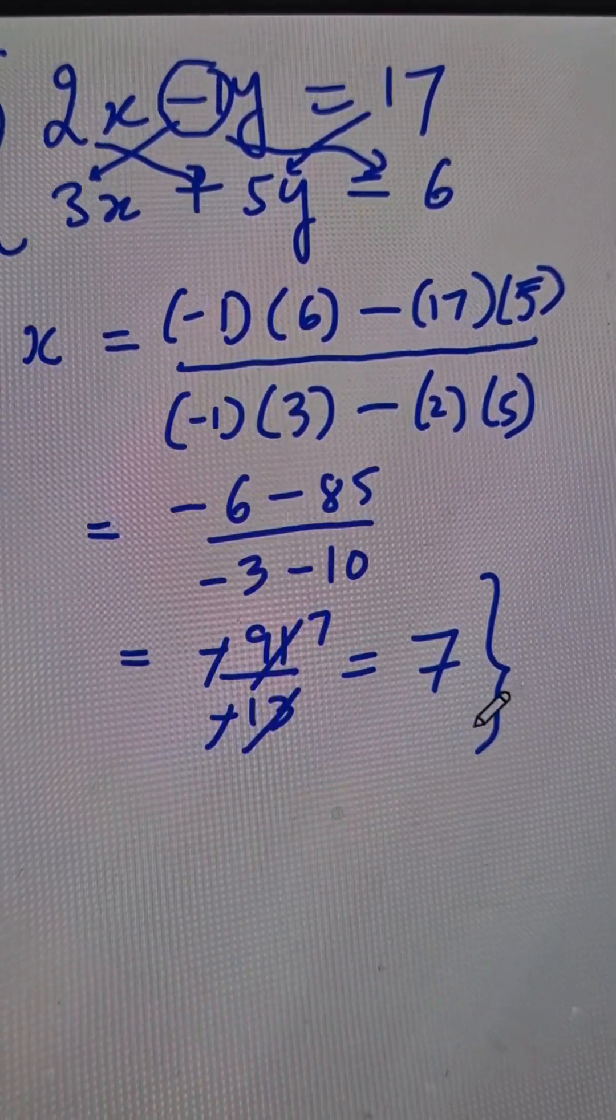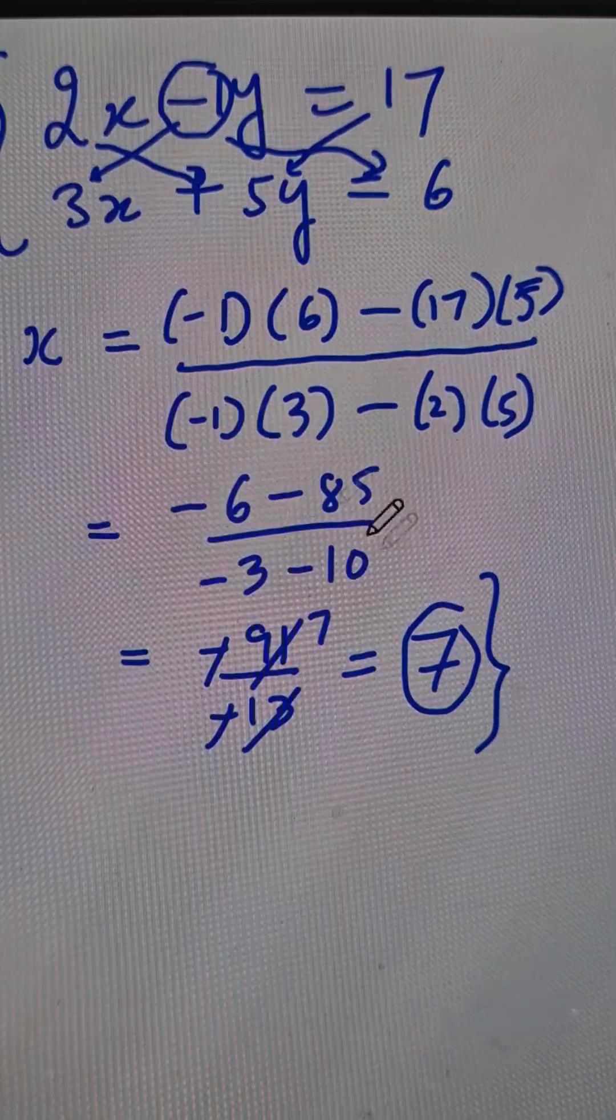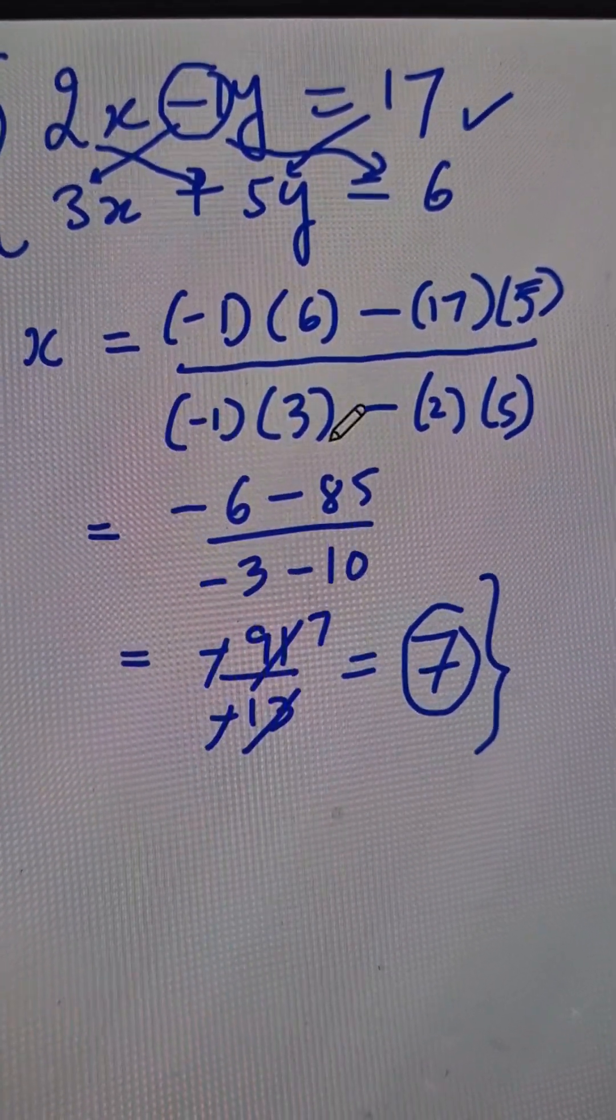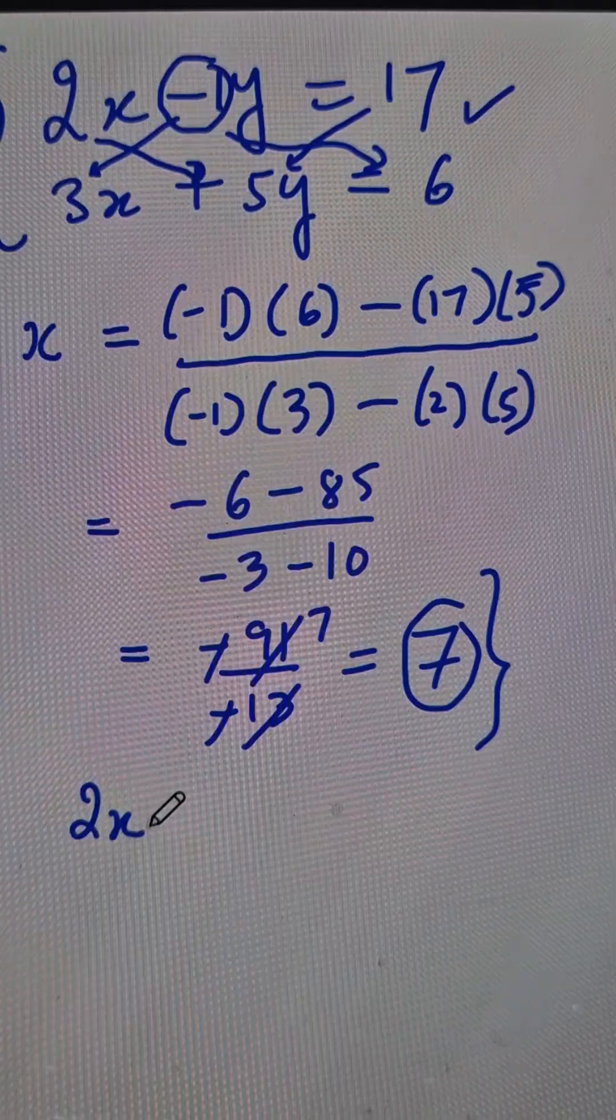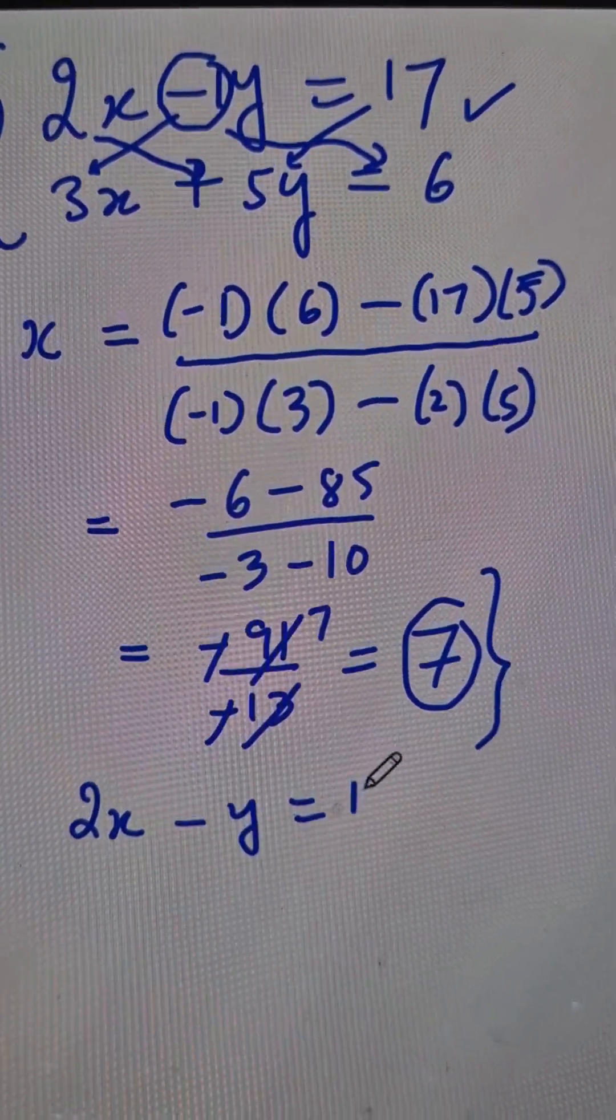And once you know the value of x, you can put it in one of the equations like the first equation here, which is 2x minus y equals 17.